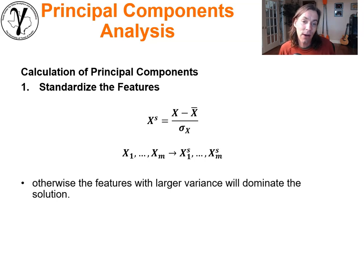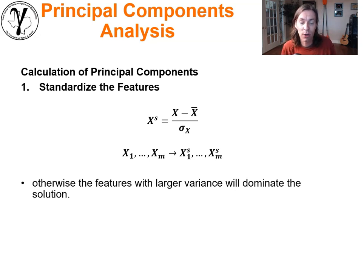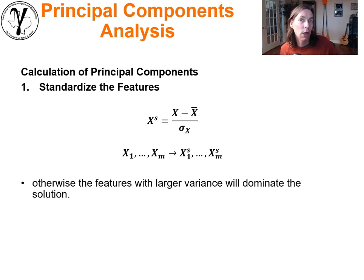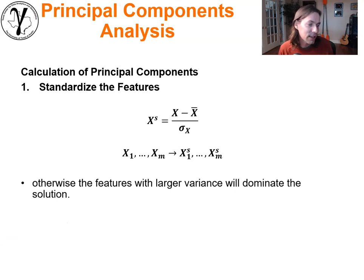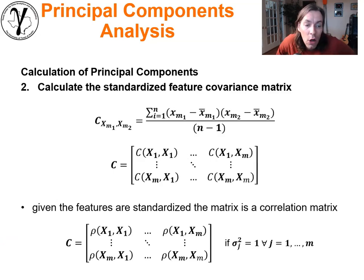That would dramatically impact PCA results. We want to remove sensitivity to the actual units — the fact that we measure acoustic impedance in a totally different range than porosity. Otherwise, features with large variances or differences in units will have a huge impact on the analysis. So we standardize first, then calculate the standardized feature covariance matrix.